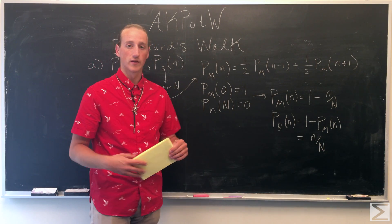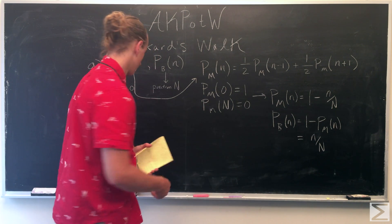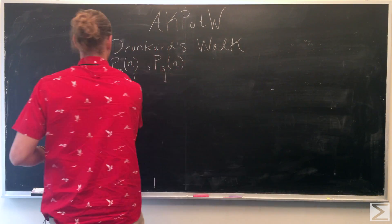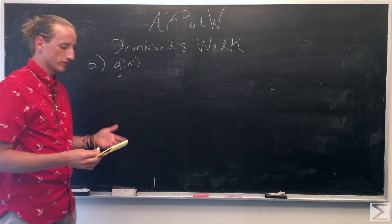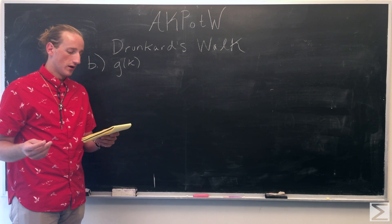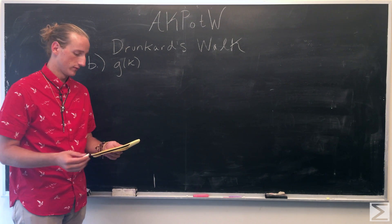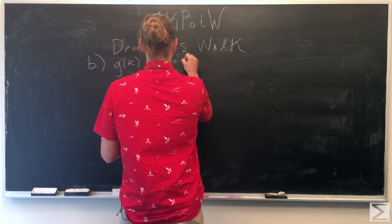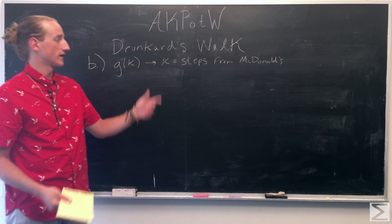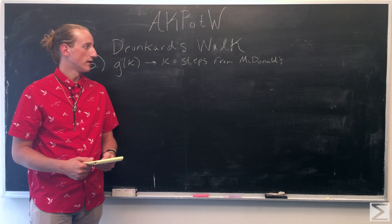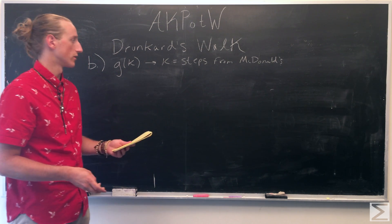Part B asks for the expected number of steps to reach either end. We can call g of k the function that expresses the expected number of steps, where k is the number of steps he is away from McDonald's. If he's at k steps from McDonald's, after taking one step he has a one-half chance of going toward McDonald's and a one-half chance of going away toward the bar.